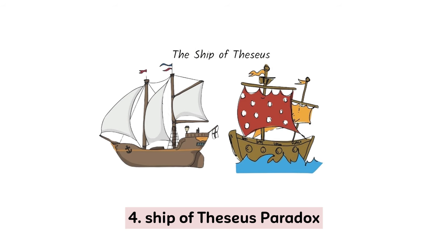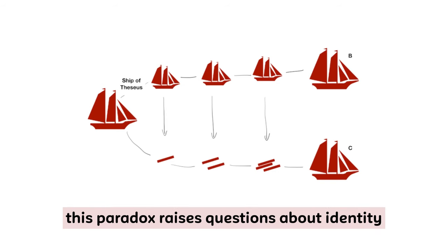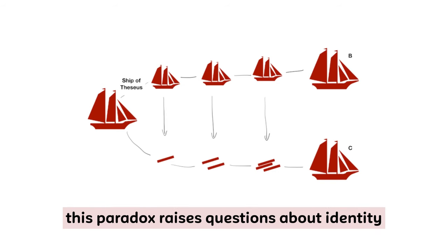4. Ship of Theseus Paradox. If all parts of a ship are replaced, is it still the same ship? This paradox raises questions about identity and continuity.